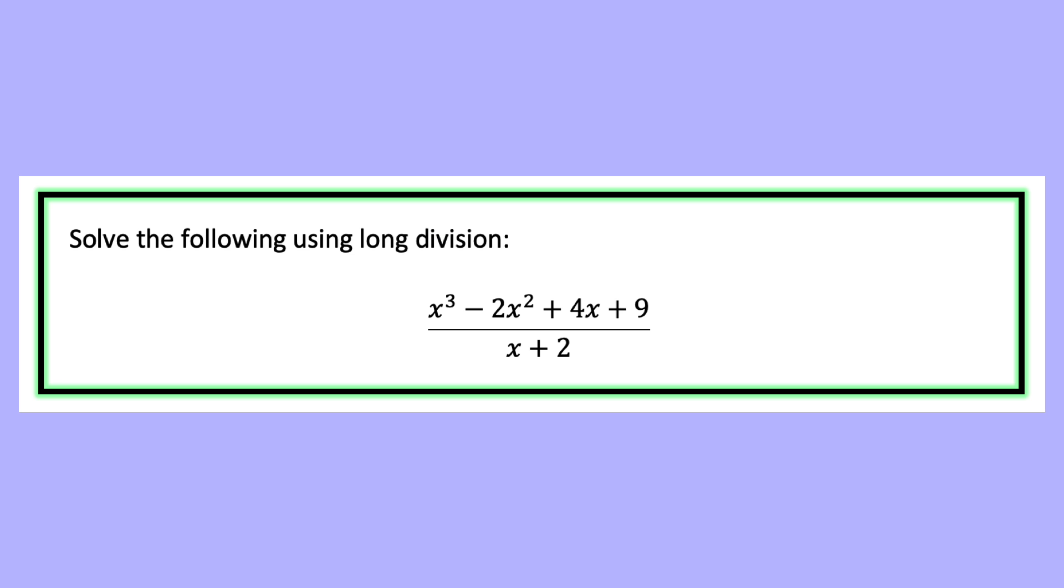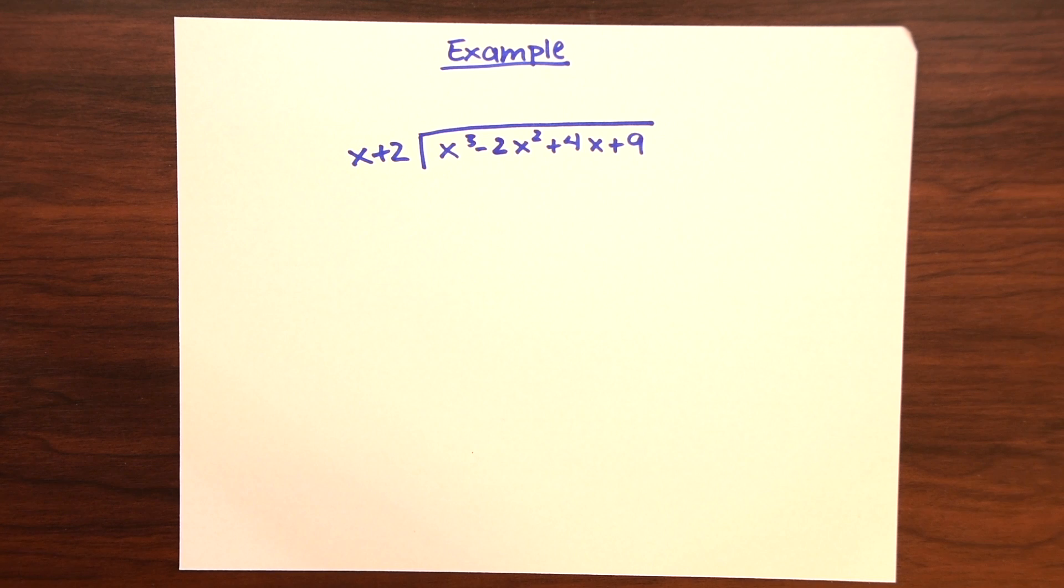So we have this example here right away. We're given x cubed minus 2x squared plus 4x plus 9 divided by x plus 2. And they want us to definitely use long division to solve this. We have to divide this polynomial divided by the binomial, x plus 2.